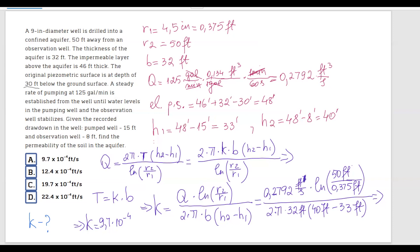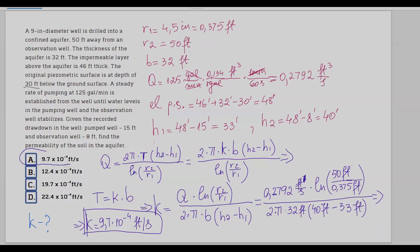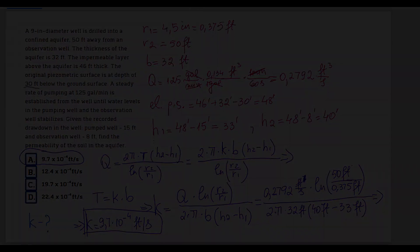The units work out to feet per second, and k equals 9.7 × 10⁻⁴ feet per second. The correct answer corresponds to that value.